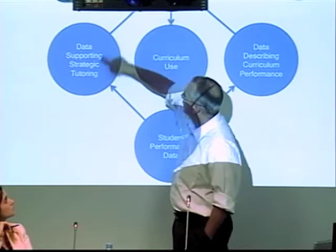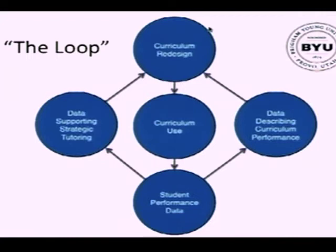This data can then feed back into redesigning your curriculum materials, and so you get this big loop just flowing. You all know about feedback in a microphone — when the speaker is too close to the microphone, the sound coming out goes in, and it comes out, and it just gets loud. In English we call that feedback — which is oddly enough the same term we use for what we tell students about how they're doing. This is a feedback loop — this should simultaneously make both our curriculum get better and our strategic tutoring get better.